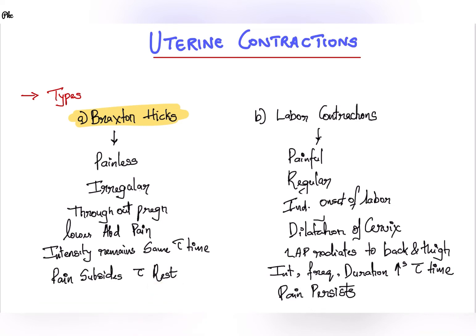Labor contractions are painful and they are found to be regular. They indicate the onset of labor and are usually accompanied with dilatation of the cervix. The lower abdominal pain radiates to the back and thigh.